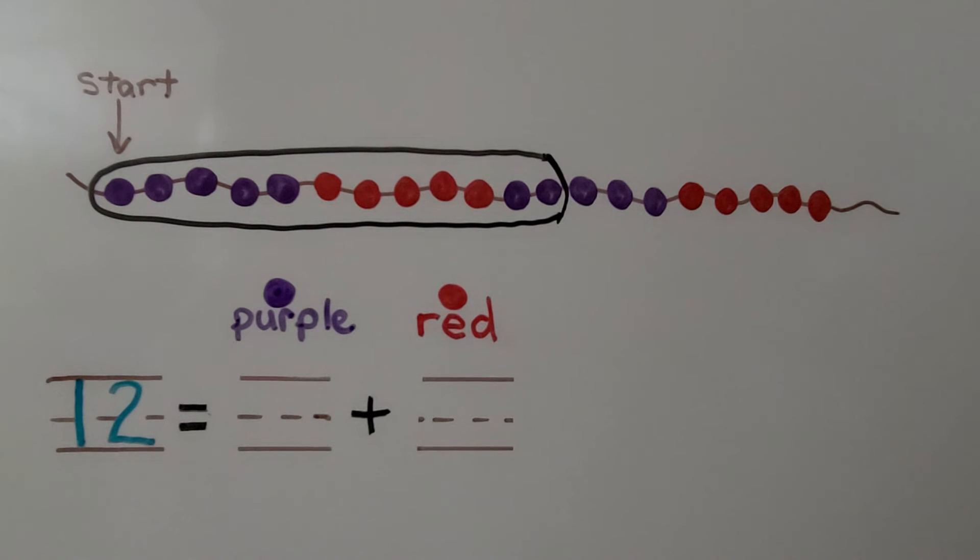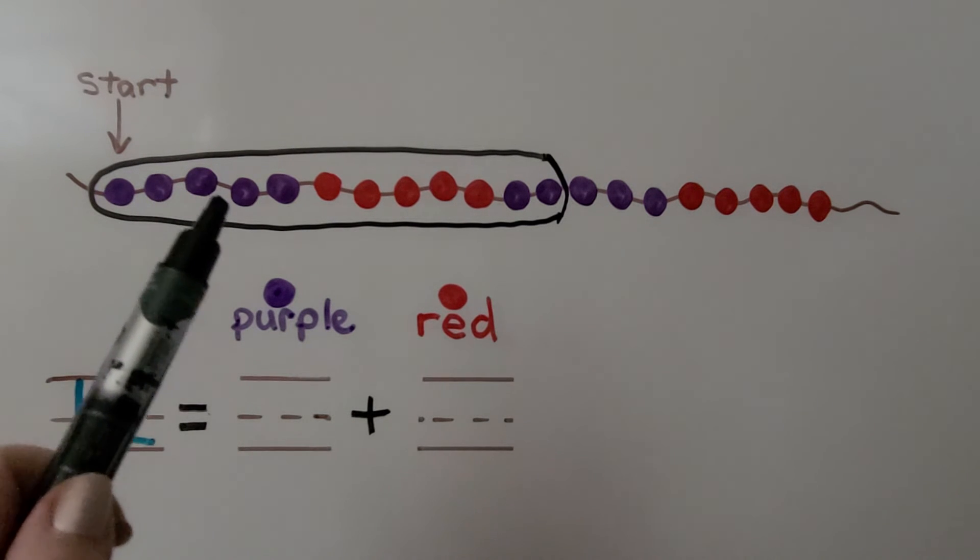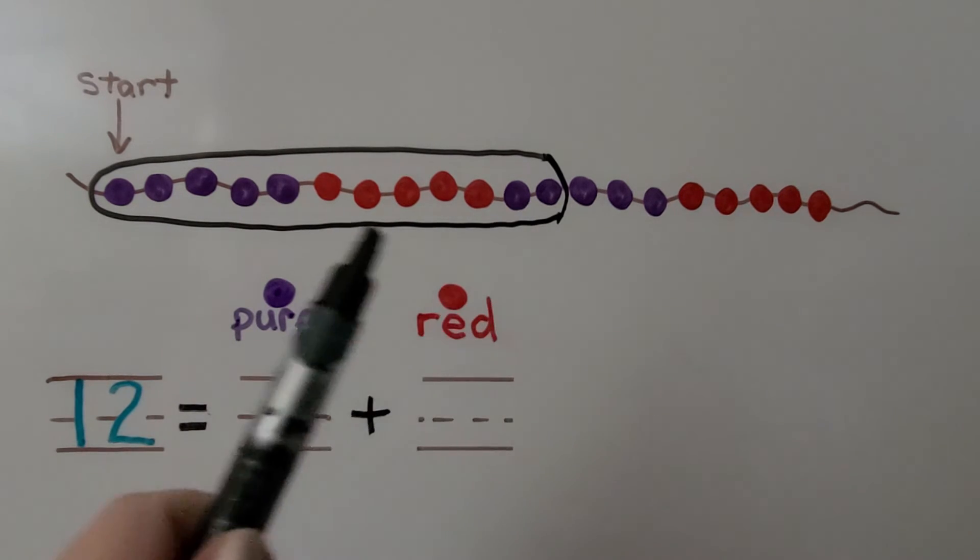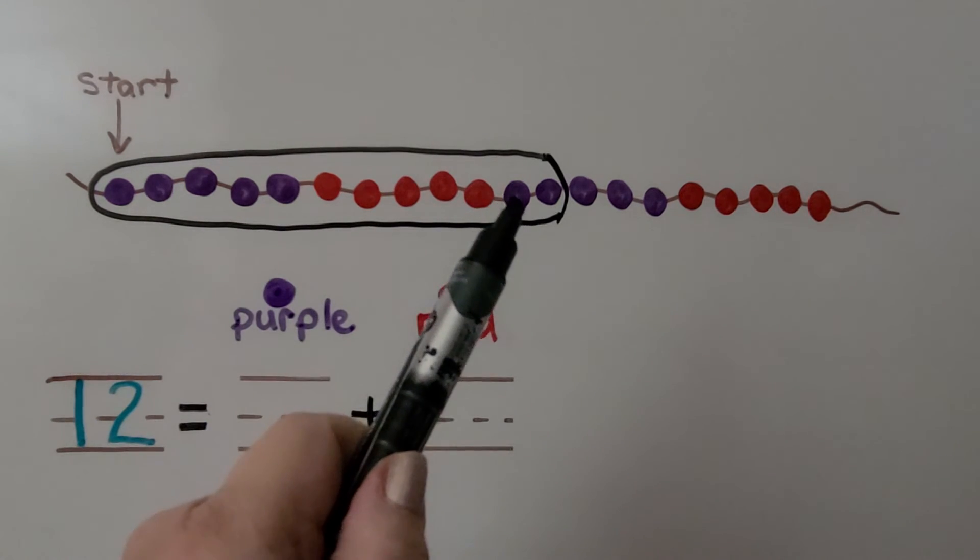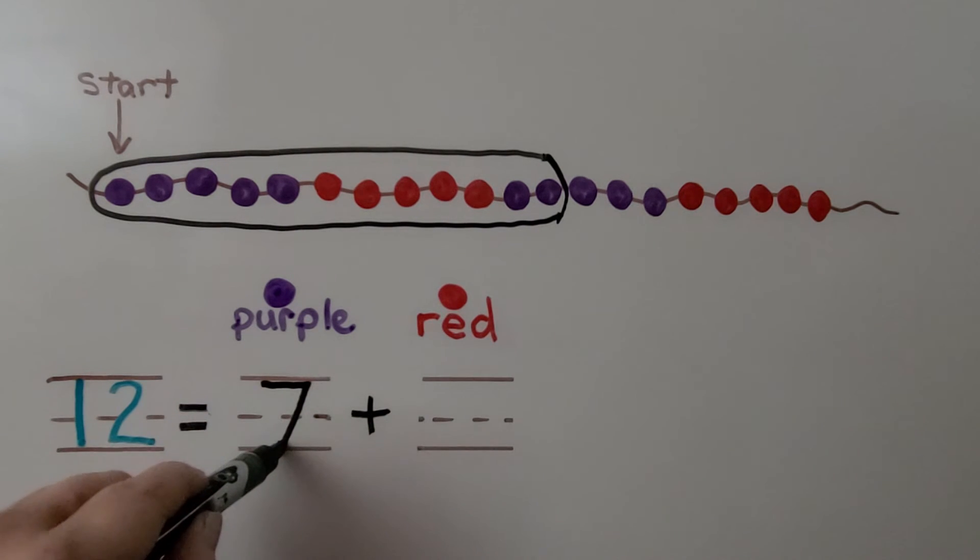We need to count the number of purple beads that we circled: 1, 2, 3, 4, 5, and we have some over here, so we have 5, 6, 7. We have 7 purple beads and we can write 7.